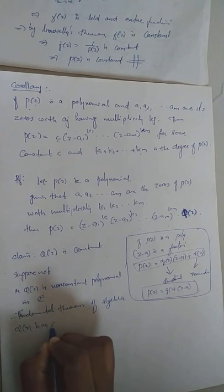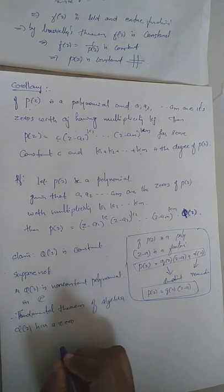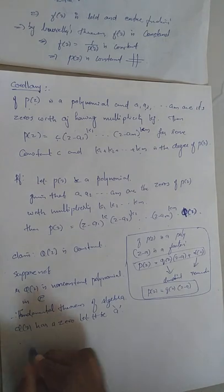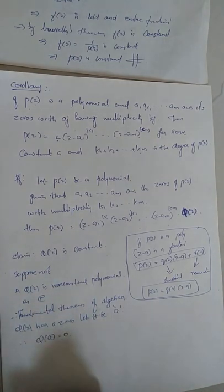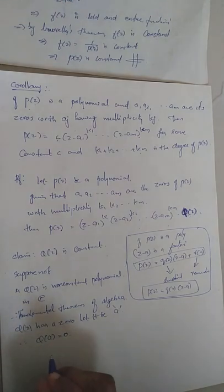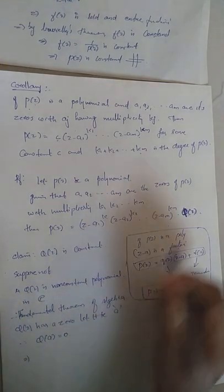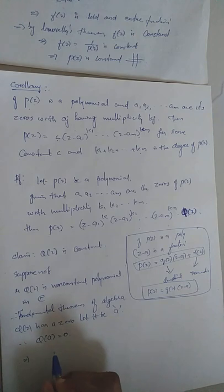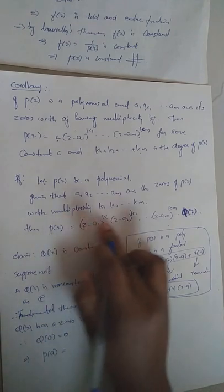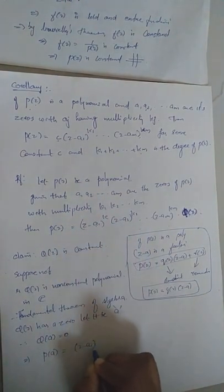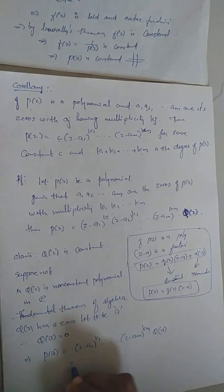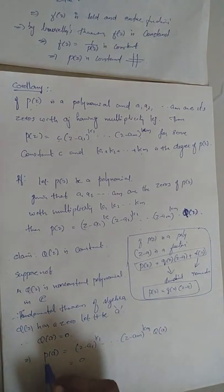Q(z) has a zero; let it be A. Therefore Q(A) = 0. Now since Q(z) is a factor of P(z), we compute P(A) = (A - a1)^k1·...·(A - am)^km·Q(A) = 0. So we get P(A) = 0, meaning A is a zero of P(z).